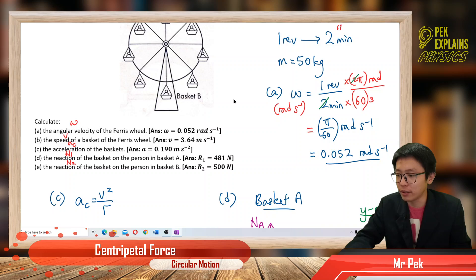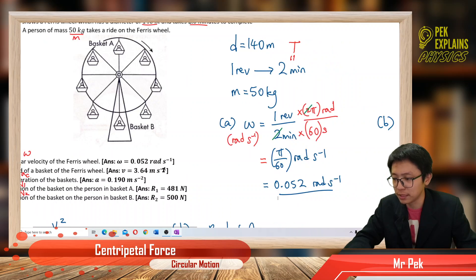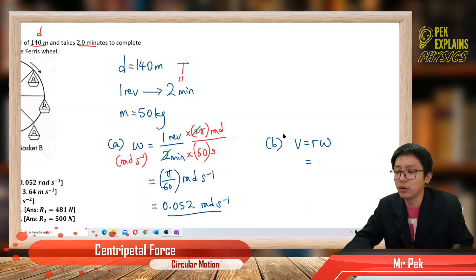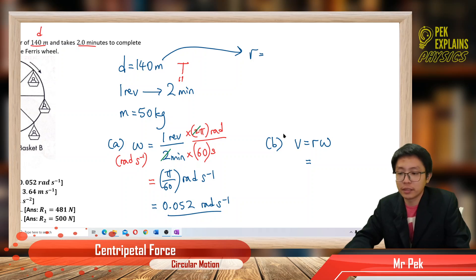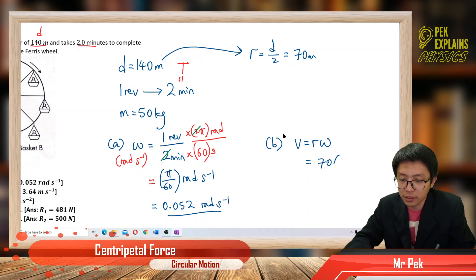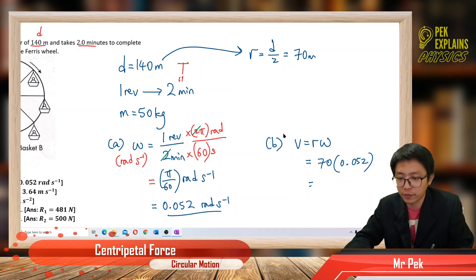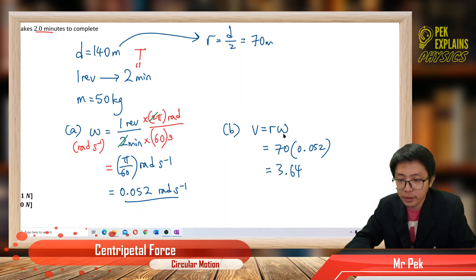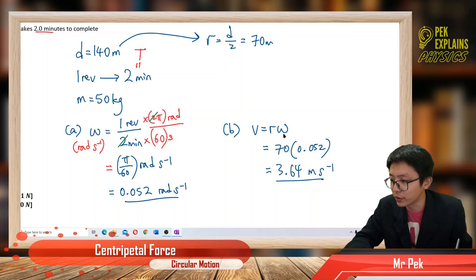Now let's find the speed of the basket on the Ferris wheel. Speed V equals R times omega. Since the diameter is 140 meters, the radius R is 70 meters. So V equals 70 multiplied by π/60, which is approximately 0.052, giving us 3.64 meters per second. That's our speed.